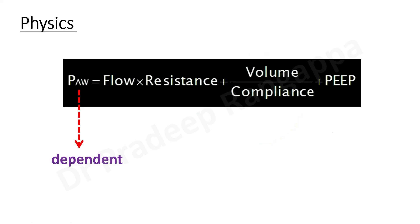Airway pressure is dependent on flow — something we can set — but resistance is dependent on the intrinsic nature of the airway; it can be high in asthma, COPD, and other conditions. Volume is something we can set, but compliance is not influenced by us; it is determined by the intrinsic nature of the lung. Compliance can be reduced where parenchyma is affected, like ARDS or pneumonia, or increased in conditions like COPD. Intrinsic PEEP keeps the alveoli open and is also something we can set.